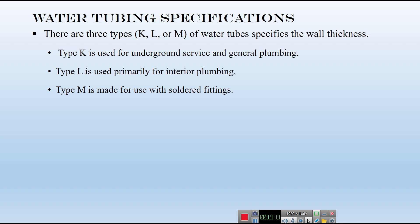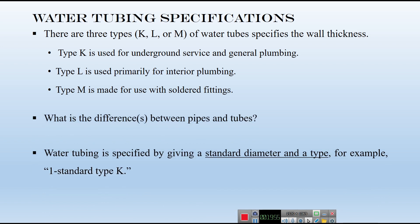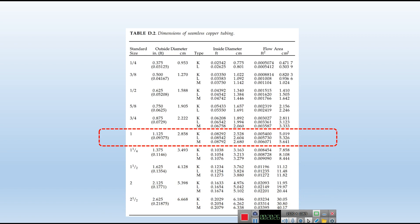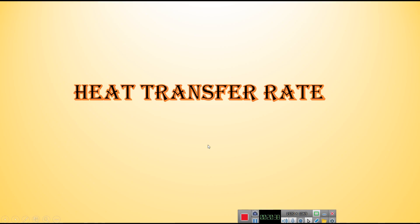For water tubing in double pipe heat exchangers, there are three types: K, L, and M. For heat exchangers, we typically use Type M with soldered fittings. Standard tube diameter again differs from IDP or ODP. Use Table D2 for tube specifications. For example, for one standard size, Type K has an inside diameter of 0.08792 inches.